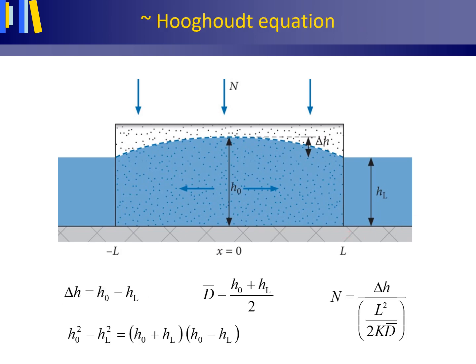As with the first derivation of the Dupuit-Forchheimer equation for unconfined groundwater flow in an earlier lecture, the horizontal length L of the aquifer must be at least five times larger than the saturated aquifer thickness G̅, which we may take as (H0 + HL) / 2. We define the convexity ΔH as H0 minus HL and split H0² minus HL² as shown, which delivers the simplified equation.